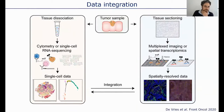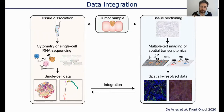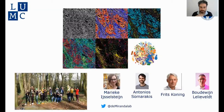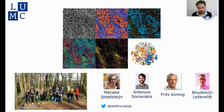In the coming years, we will probably be working very hard on the integration of data derived from different multiplexed platforms. We think that IMC can really play an important role in, for instance, supporting the mapping of single-cell data back to tissues. I'll finish my presentation here, acknowledging the people that are actually doing the good work, and I'm more than happy to answer questions.